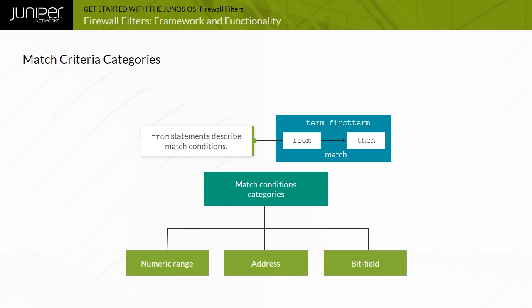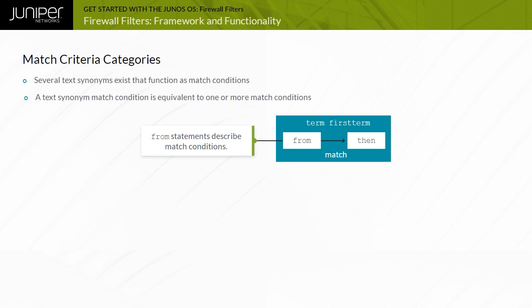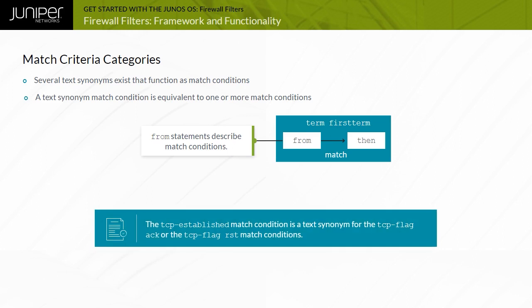You can generally use the same evaluation options for each condition within a category. Several text synonyms exist that function as match conditions. A text synonym match condition is equivalent to one or more match conditions. For example, the TCP established match condition is a text synonym for the TCP flag ACK or the TCP flag RST match conditions.